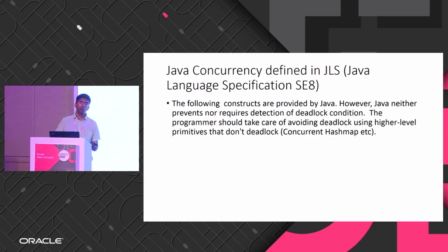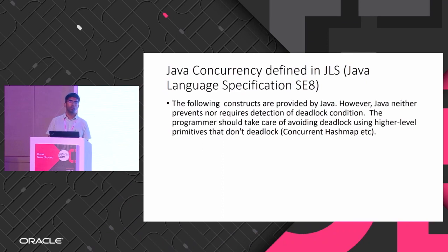In Java, we have notify, await, and notifyAll. Why do we need to worry about synchronization or why do we have those keywords? Why doesn't Java just give it to us directly — just say 'parallel' and execute everything without going into the nitty-gritty?